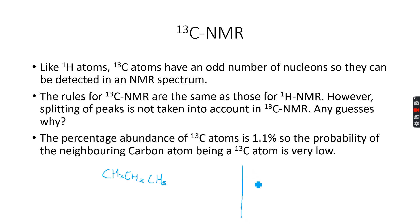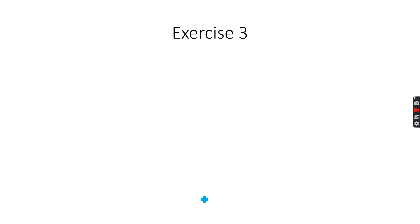You will have a separate table in the data booklet for the chemical shift values of carbon-13 NMR spectra. You can apply the same rules as we did for proton NMR spectra, and we'll be good to go.